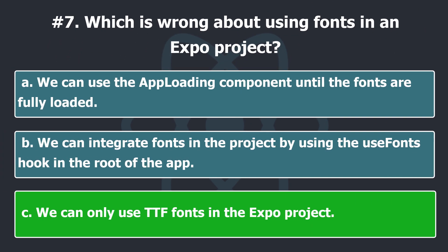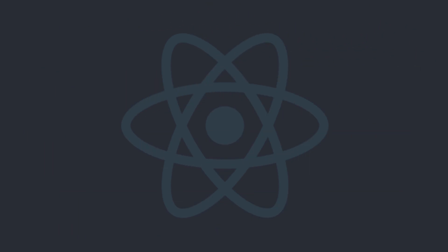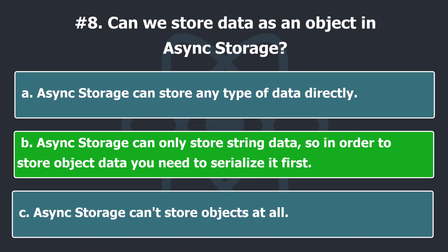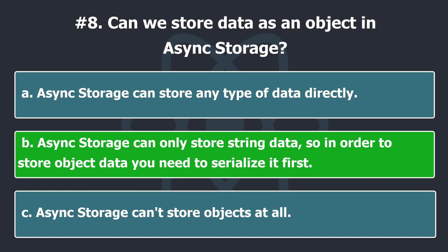Expo can use TTF and OTF font formats on all platforms and can use other formats on some platforms. Async Storage can only store string data, so in order to store object data, you need to serialize it first.